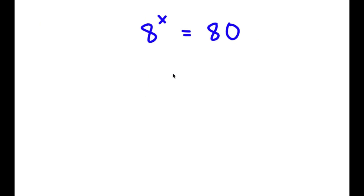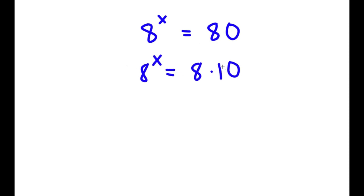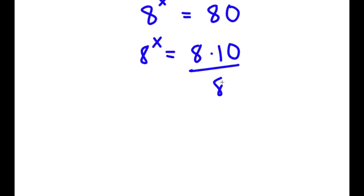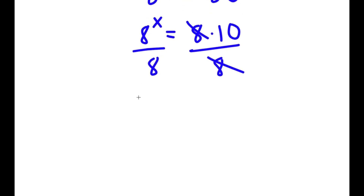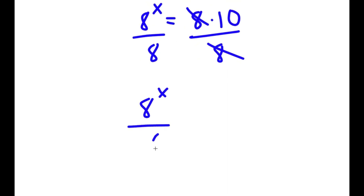In this problem, I have 8 to the power of x is equal to 80. To solve this, I'm going to first rewrite 80 as 8 times 10. So now I have 8 to the power of x is equal to 8 times 10. And now I'm going to divide both sides by 8, so I have 8 to the power of x over 8 is equal to 10.